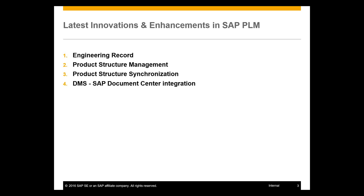The primary topics are around change management, so the engineering record which is part of PLM, then product structure management, and our handover to manufacturing capability which is product structure synchronization. We have also introduced new innovations in the EHP-8 scenario for document management system — the classical DMS — where we have now introduced the capability to link and collaborate with a document center, or mobile documents as it is also called, which is a cloud-based capability.